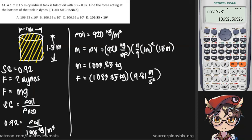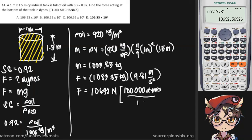And we get a value of 10,632 newtons. Now, to convert that into dynes, we can simply multiply it by 100,000. Let's put that in our calculator and see how many zeros this has — 1, 2, 3, 4, 5, 6, 7. Our final answer would be 106.32 times 10 raised to the 7 dynes.